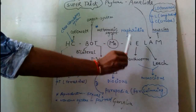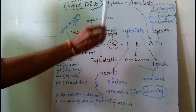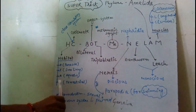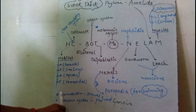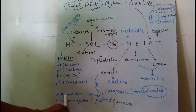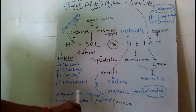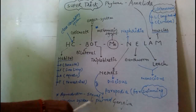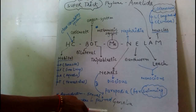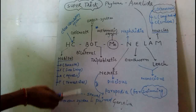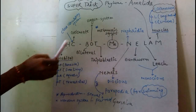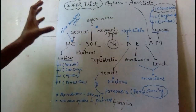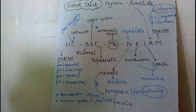This is the feature. Whatever is given in the mnemonic — reproduction is sexual, and the nervous system features are also represented. Remember these are the features presented in the mnemonic.